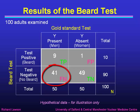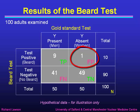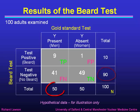We also have 41 false negatives — men who fail the beard test because they don't have beards. And perhaps surprisingly, we have one false positive: a woman with a beard who gives a positive result on the beard test but is nevertheless a woman. Adding up the rows and columns, we get a total of 10 with a positive beard test and 90 with a negative beard test, with 50 men and 50 women overall, making a total of 100.